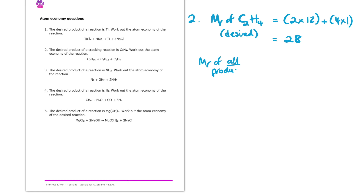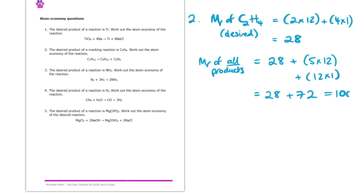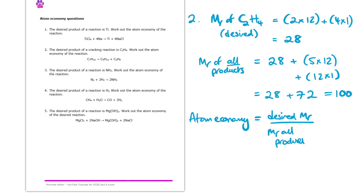Next up, we want to get the MR of all of the products. That is the ethene we've just worked out, so we can write 28, and then we want to add the MR of the pentane. We've got five carbons and 12 hydrogens. Working this out, we end up getting 28 plus 72, which gives us 100 for the MR of all of the products. Using our Atom Economy formula — MR of the desired product divided by MR of all products, times by 100 — that is going to be 28 over 100 times by 100, which gives us simply 28%.